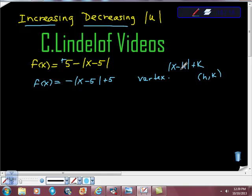Remember that this point h here satisfies the condition that this whole thing equals 0. So for what x value does x minus 5 equal 0? It happens to be 5. So we have a vertex at (5, 5).